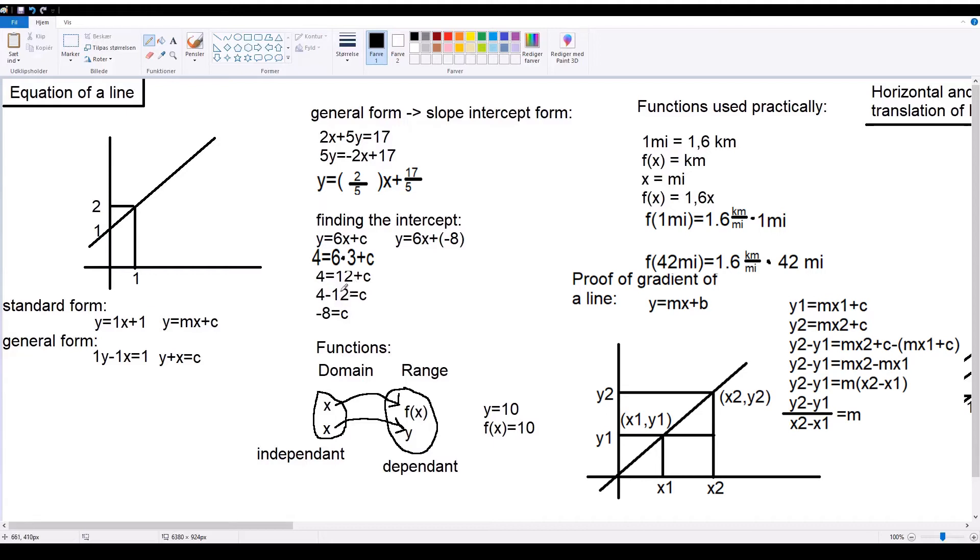Then you isolate c. So, 4 minus 12 equals c, meaning that minus 8 equals c in this case. So, the formula would look like this.